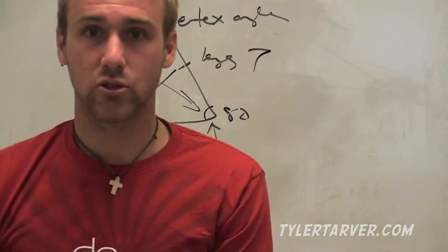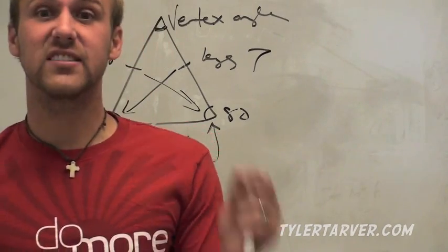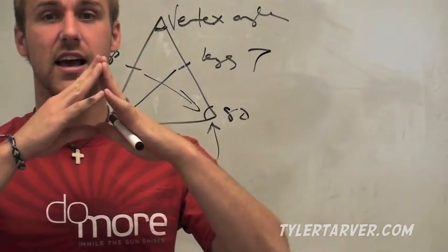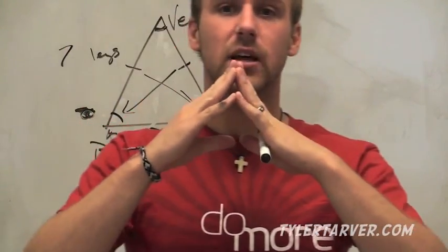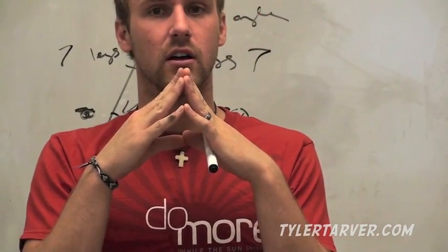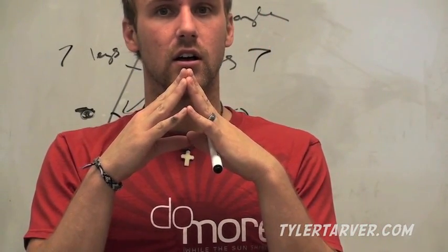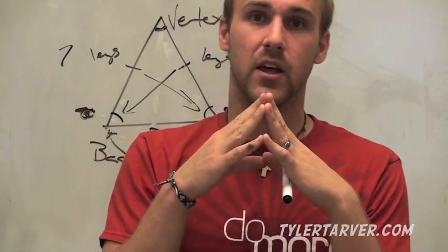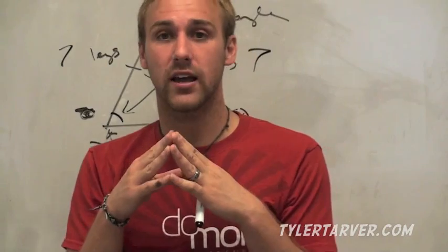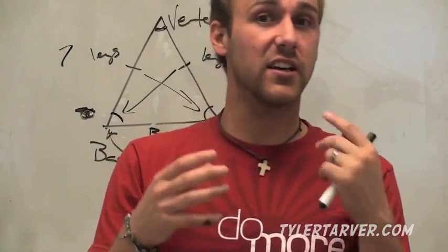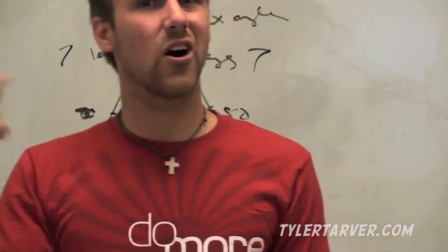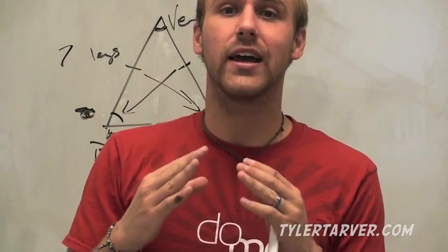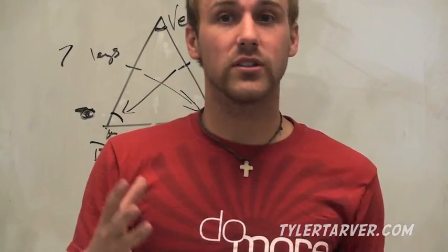So we have an equilateral triangle. If all of the sides are the same, then all of the angles are the same, which makes it equiangular. That's why people get them mixed up — if it's equilateral, it's always equiangular, and if it's equiangular, it's always equilateral.